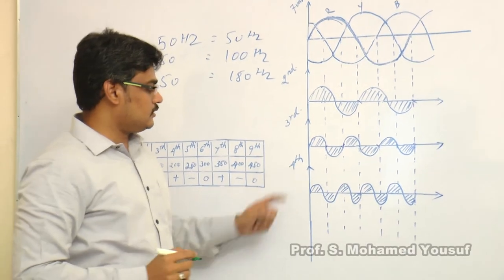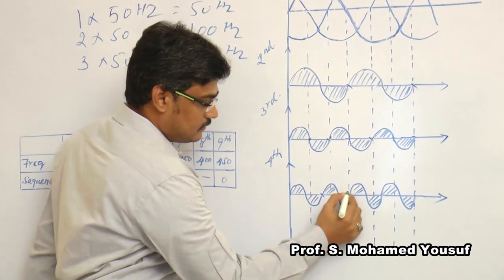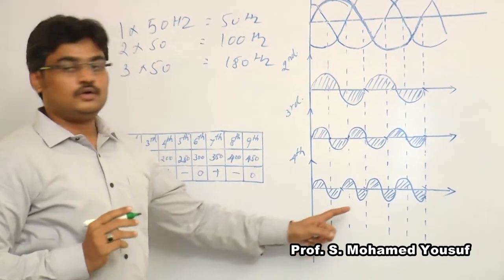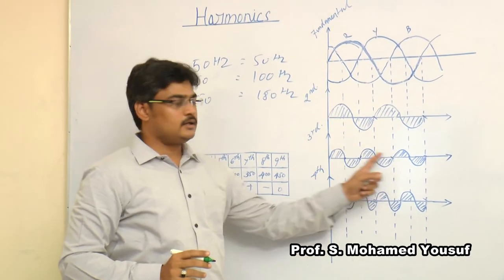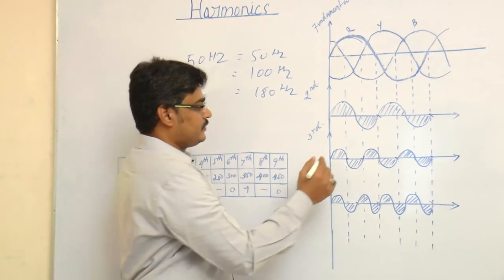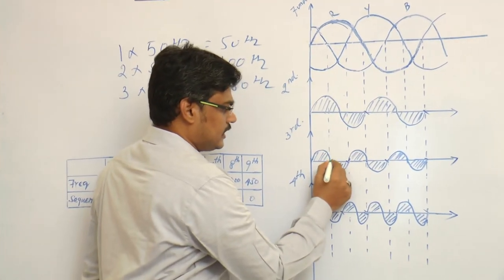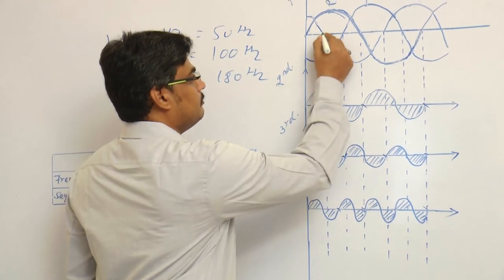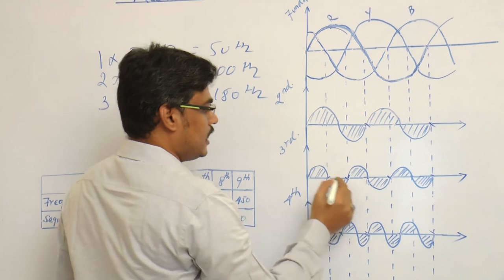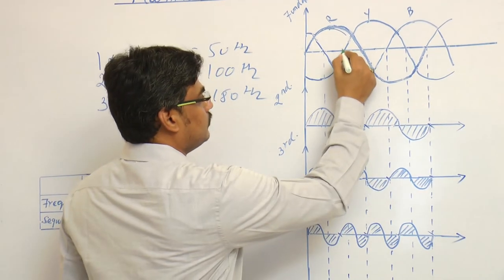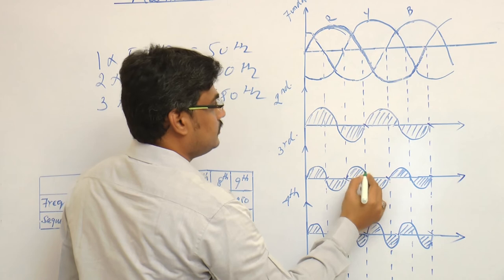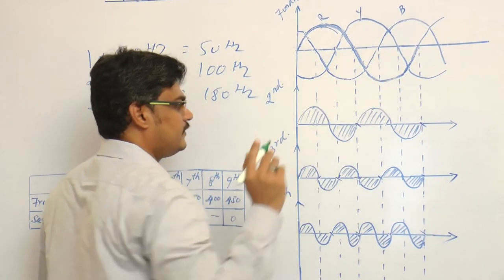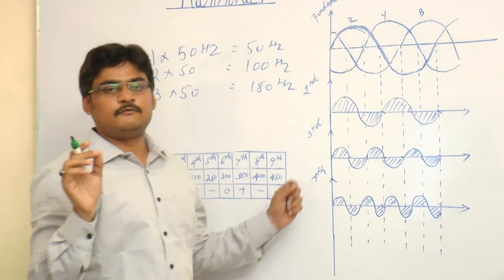If it is fourth order harmonics, that's 50, 50, 50, 50, totally 200 Hz. Now carefully look at the third order harmonics. Note this point: at this point it pollutes your B phase. At this point it pollutes your Y phase. At this point it pollutes your R phase.